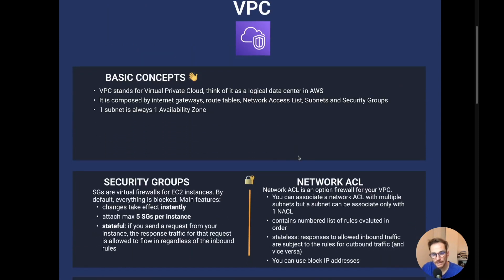Let's move on to security groups and network access control list concepts. Security groups — we've also seen this in the EC2 module — are basically a virtual firewall for EC2 instances. By default everything is blocked. The main feature is that all changes you make to security groups take effect instantly. You can attach a maximum of 5 security groups per instance, and security groups are stateful — so if you send a request from your instance, the response traffic is allowed to flow in regardless of the inbound rules.